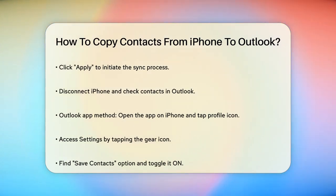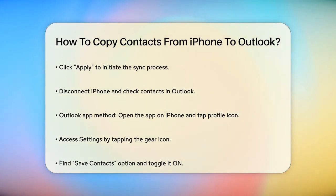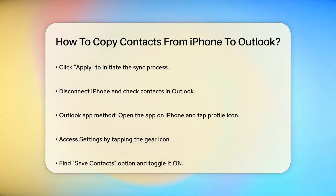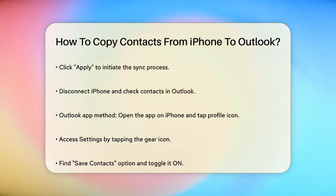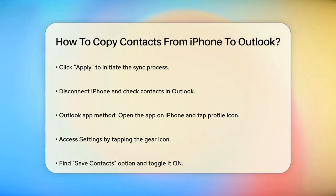Open Outlook and check the Contacts tab to see your imported contacts. Another method involves using the Outlook app directly on your iPhone. Open the Outlook app, tap on your profile icon at the top left corner, and then tap the gear icon for Settings. Select your Outlook account and find the Save Contacts option. Toggle it to On, and tap Save to my iPhone.